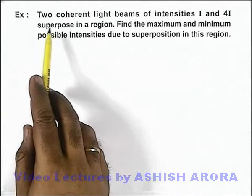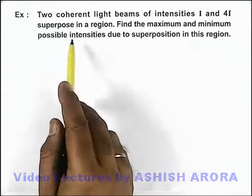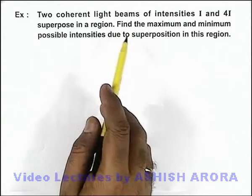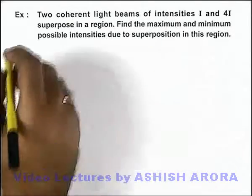In this example, we are given that two coherent light beams of intensities I and 4I superpose in a region. We are required to find the maximum and minimum possible intensities due to superposition in this region.